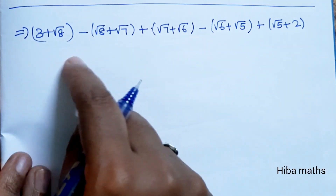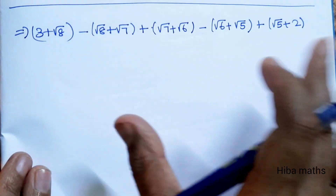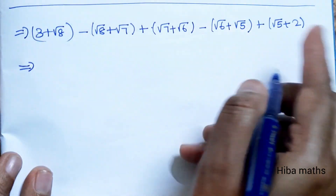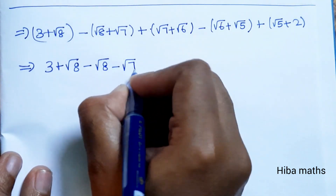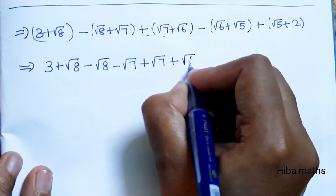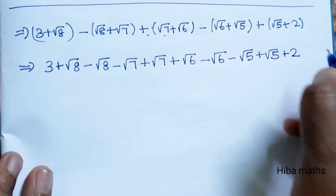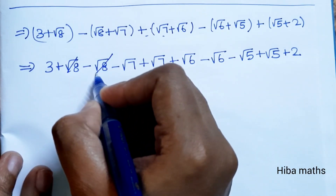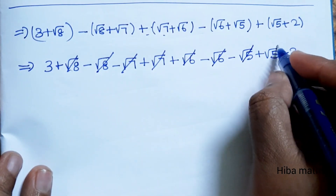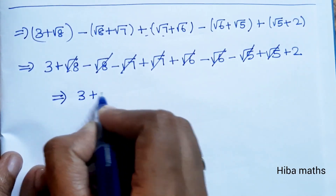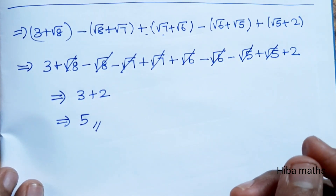Now substituting all simplified terms back: (3 + √8) - (√8 + √7) + (√7 + √6) - (√6 + √5) + (√5 + 2). We can see that +√8 and -√8 cancel, -√7 and +√7 cancel, +√6 and -√6 cancel, -√5 and +√5 cancel. What remains is 3 + 2 = 5. So the final answer is 5. Thank you so much for watching.